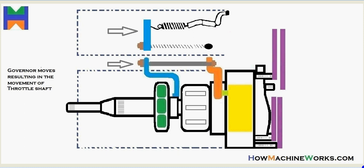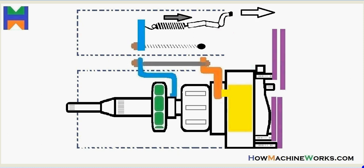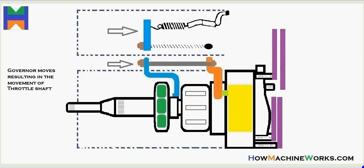You can see the governor arm moves, resulting in the movement of the throttle shaft. And as a result of that, the port opens up. It opens up the connection between the pump and the metering valve. You can see the animation or the blue governor is moving and the metering valve is moving, which results in the opening up of the port.